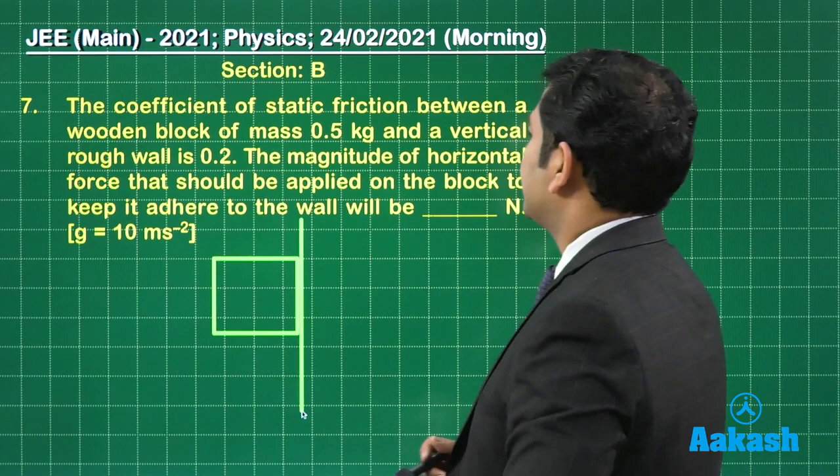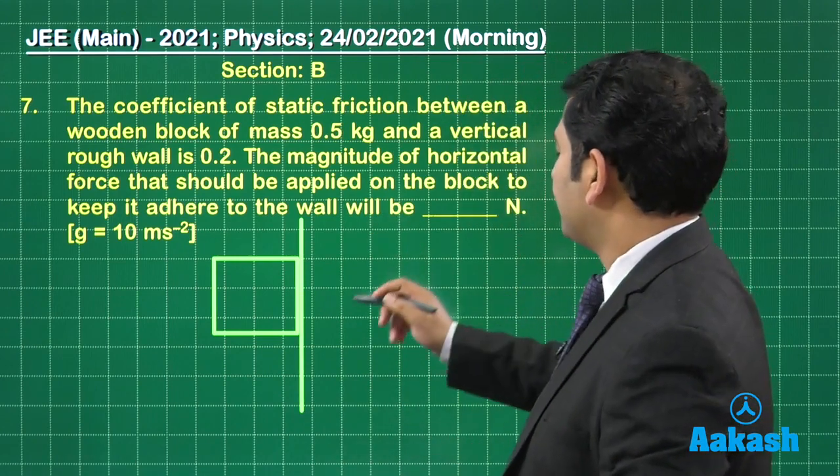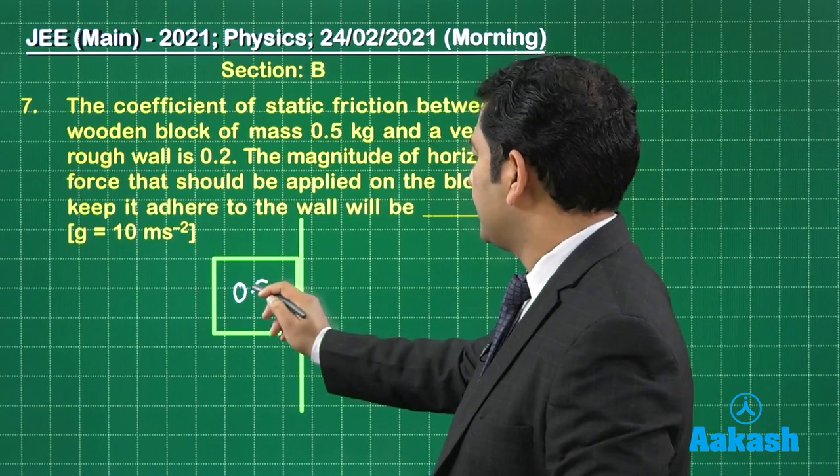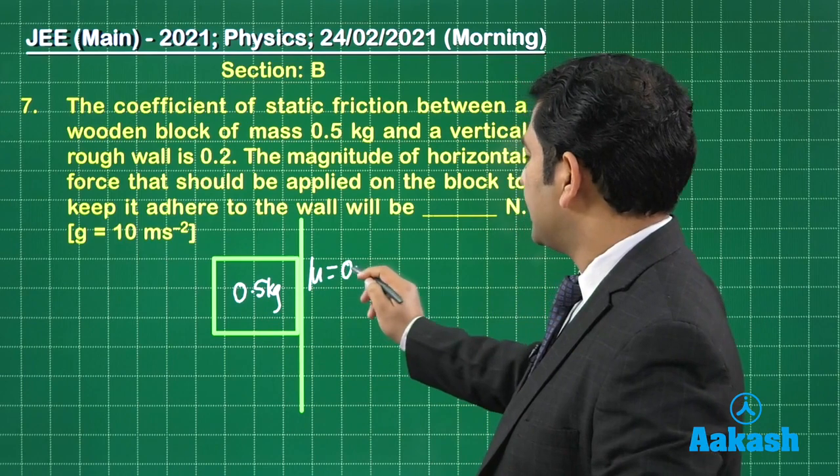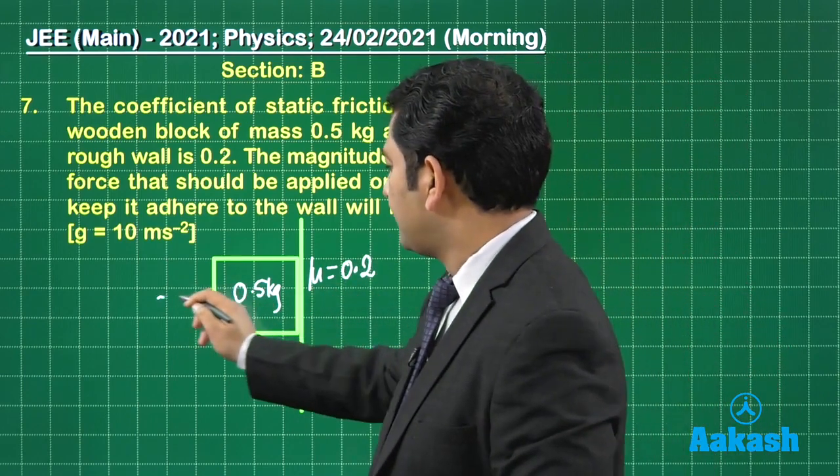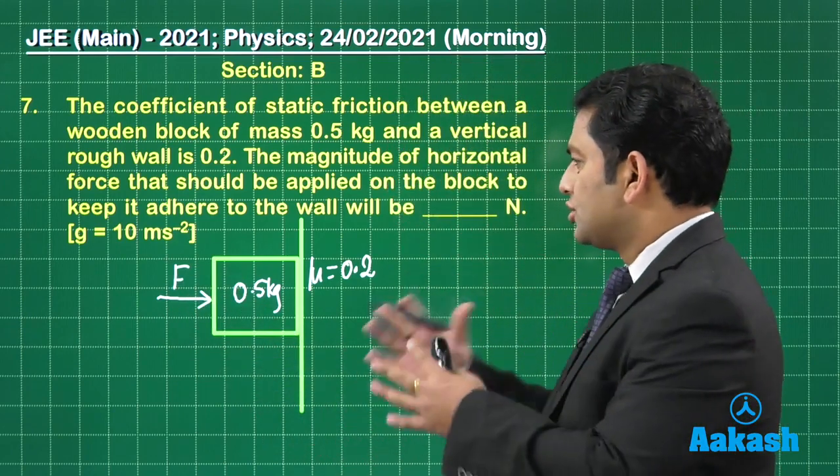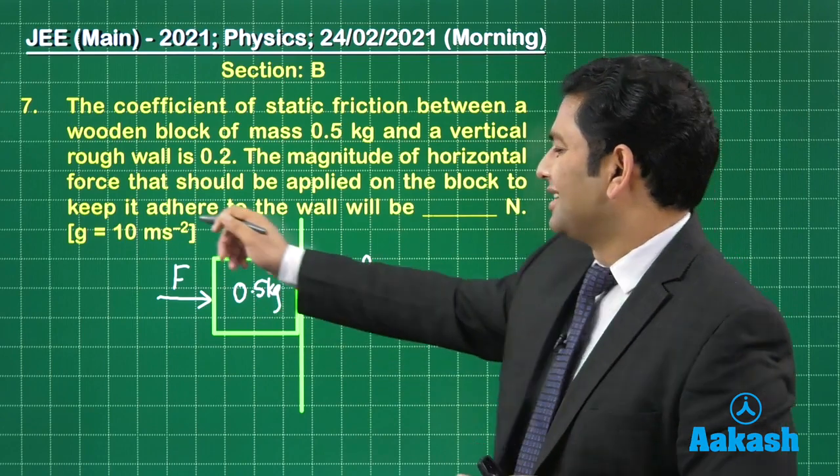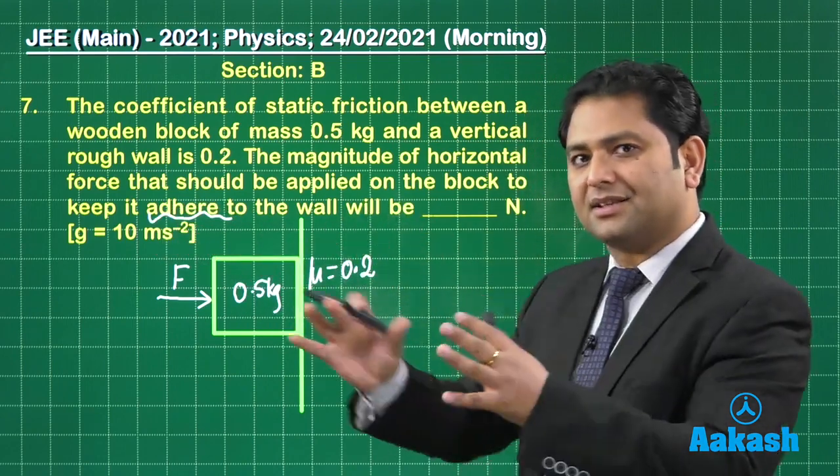So this is the case. The coefficient of static friction between the wooden block of mass 0.5 kg and the vertical wall, that's 0.2. Magnitude of the horizontal force that should be applied so that this block, there's a word given, adhere, that means it remains there, it does not slip.